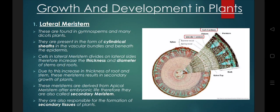The third part is lateral meristem — lateral means sidewise. Intercalary meristem majority are in monocots, whereas lateral meristems are present predominantly in dicotyledonous plants and gymnosperms. They are present in the form of cylindrical sheets in the vascular bundles and beneath the epidermis. Between the vascular bundles there is a layer called the vascular cambium, which is involved in secondary tissue formation. On the lateral side, stem thickness and stem diameter increase.